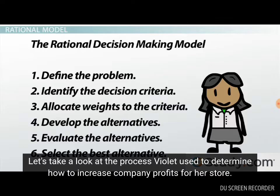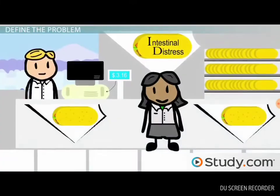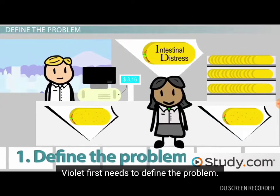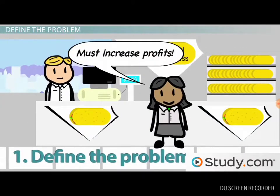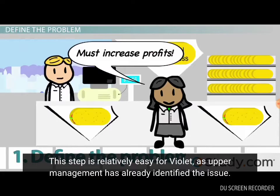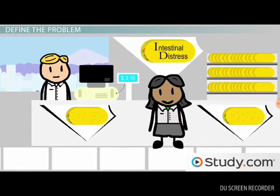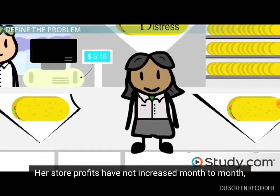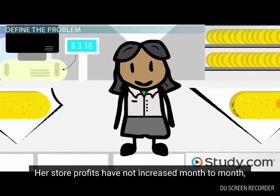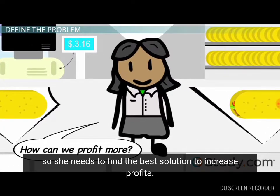Let's take a look at the process Violet used to determine how to increase company profits for her store. Violet first needs to define the problem. This step is relatively easy for Violet as upper management has already identified the issue — her store profits have not increased month to month, so she needs to find the best solution to increase profits.